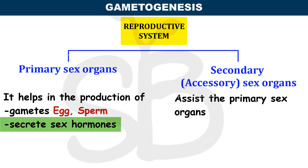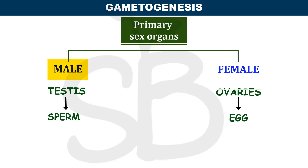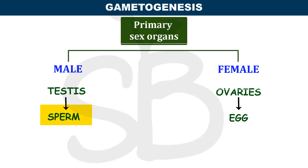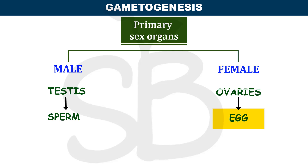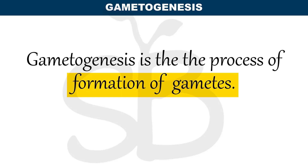Gametogenesis is the process of gamete formation. Primary sex organs — in males, the testes, and in females, the ovaries — are responsible for this. The process of formation of gametes is called Gametogenesis.